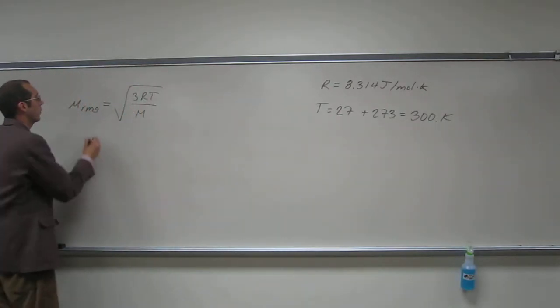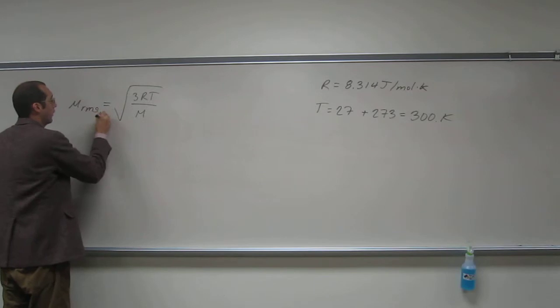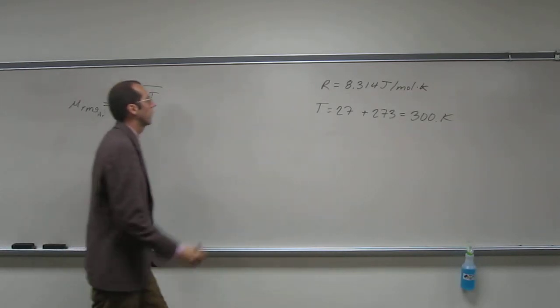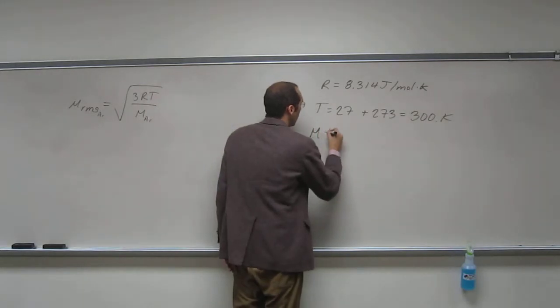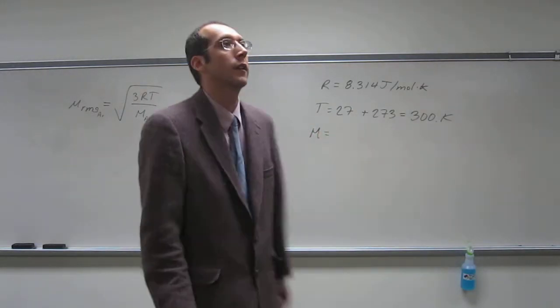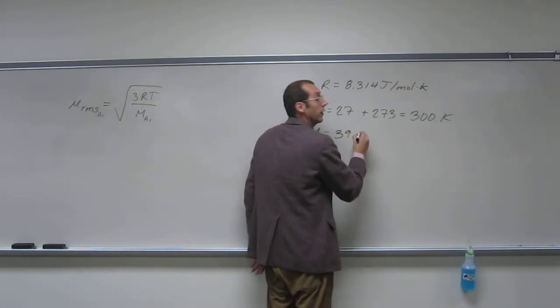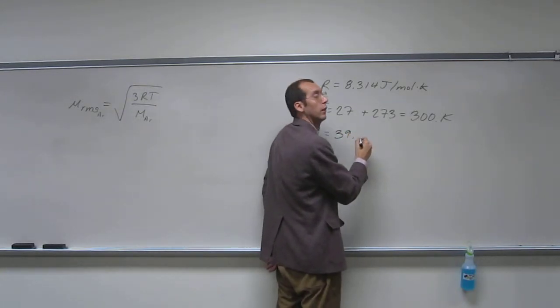And it's going to be the root mean squared speed of argon, because that's what the problem said. So we're looking for the molar mass of argon. So how do we figure that out? We just look up at the periodic table. 39.95.